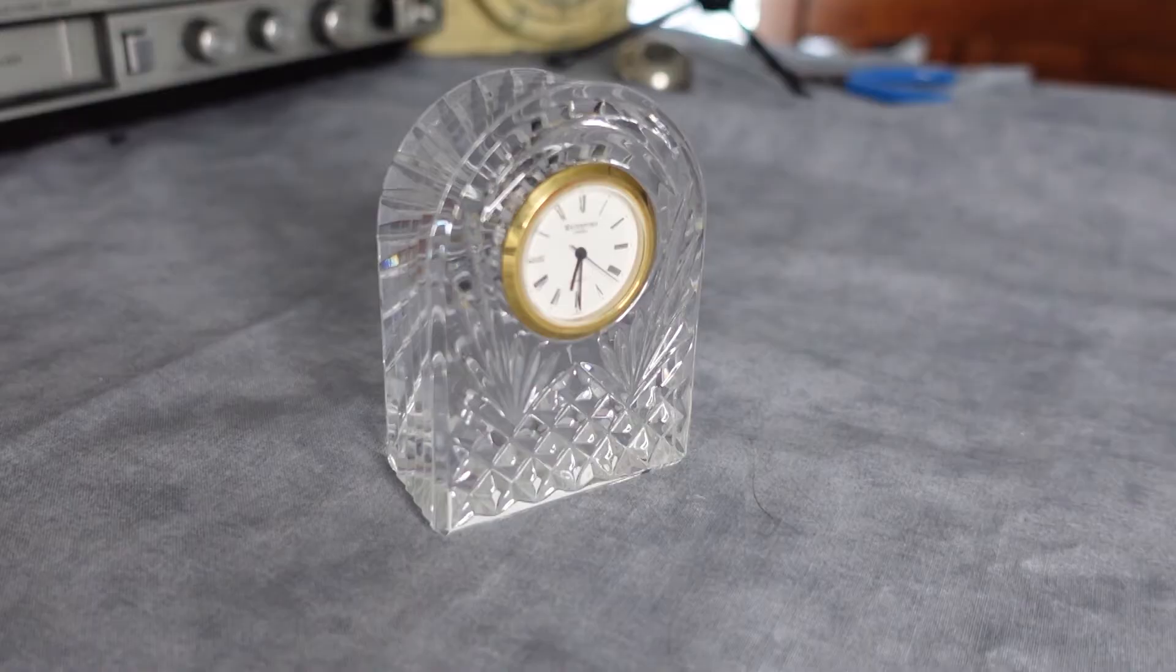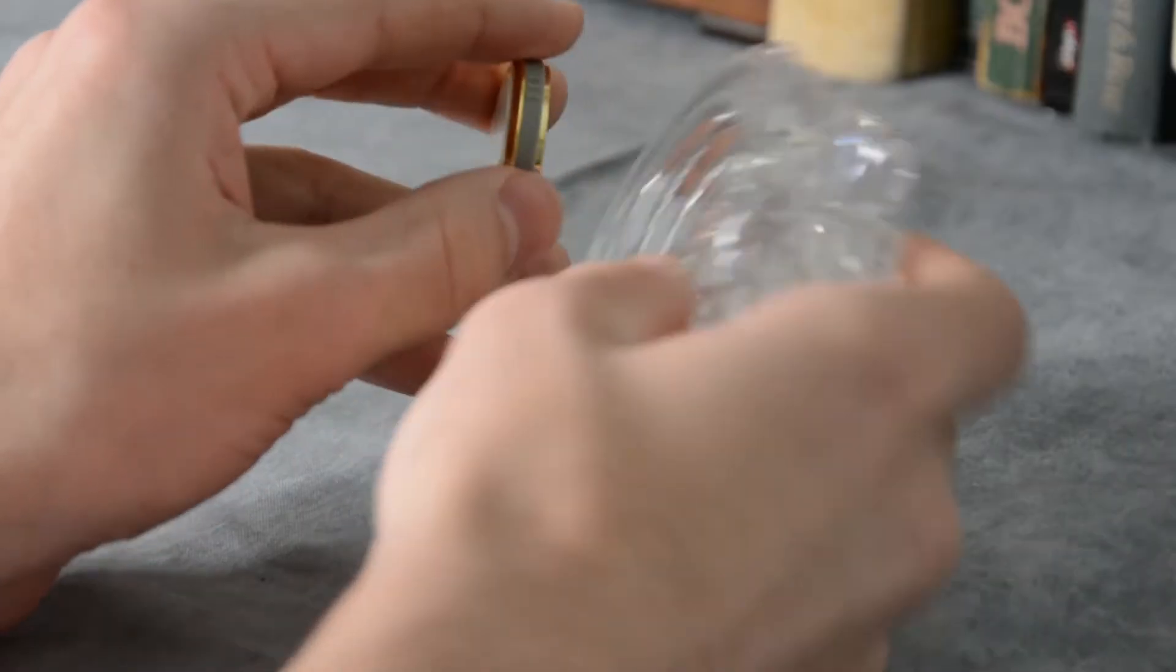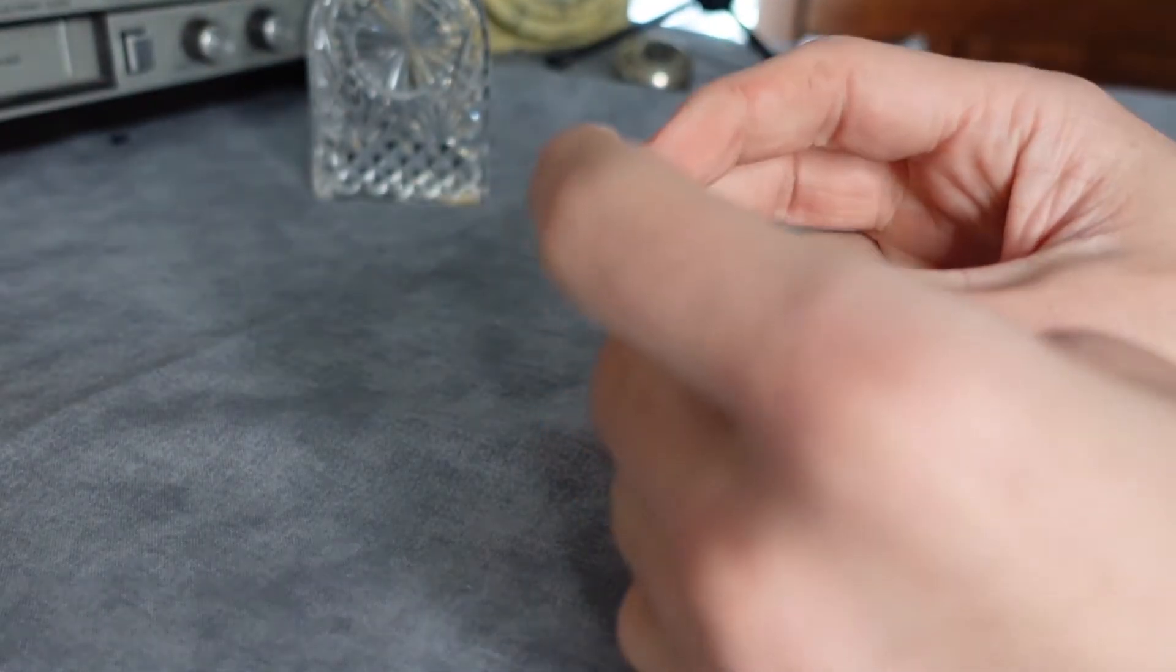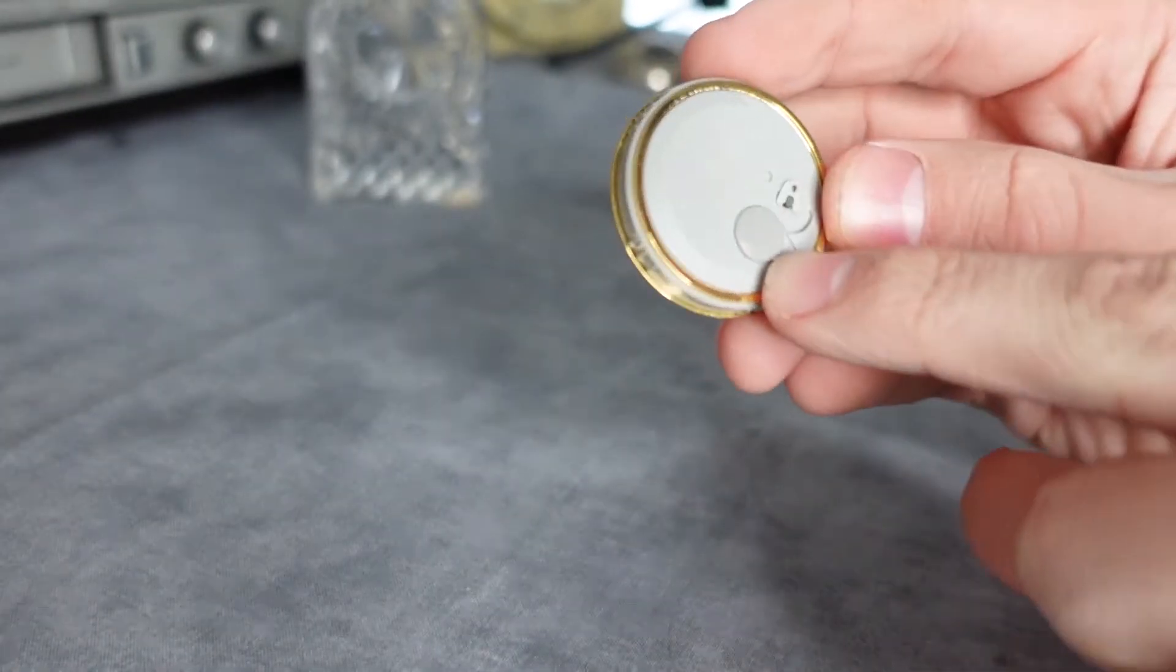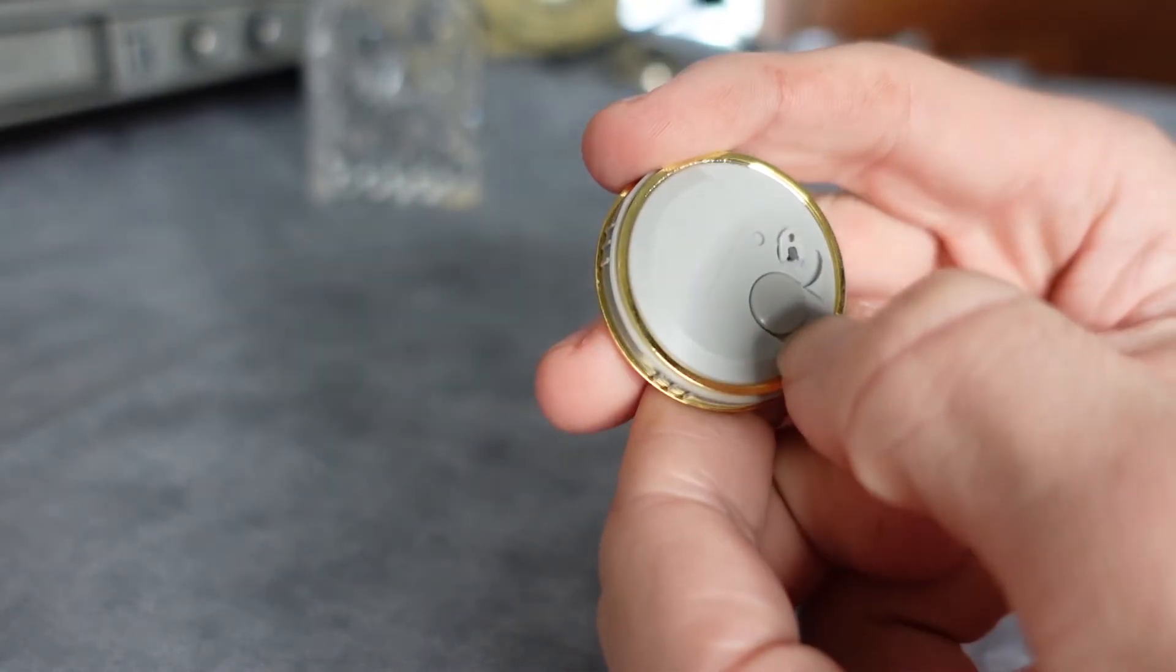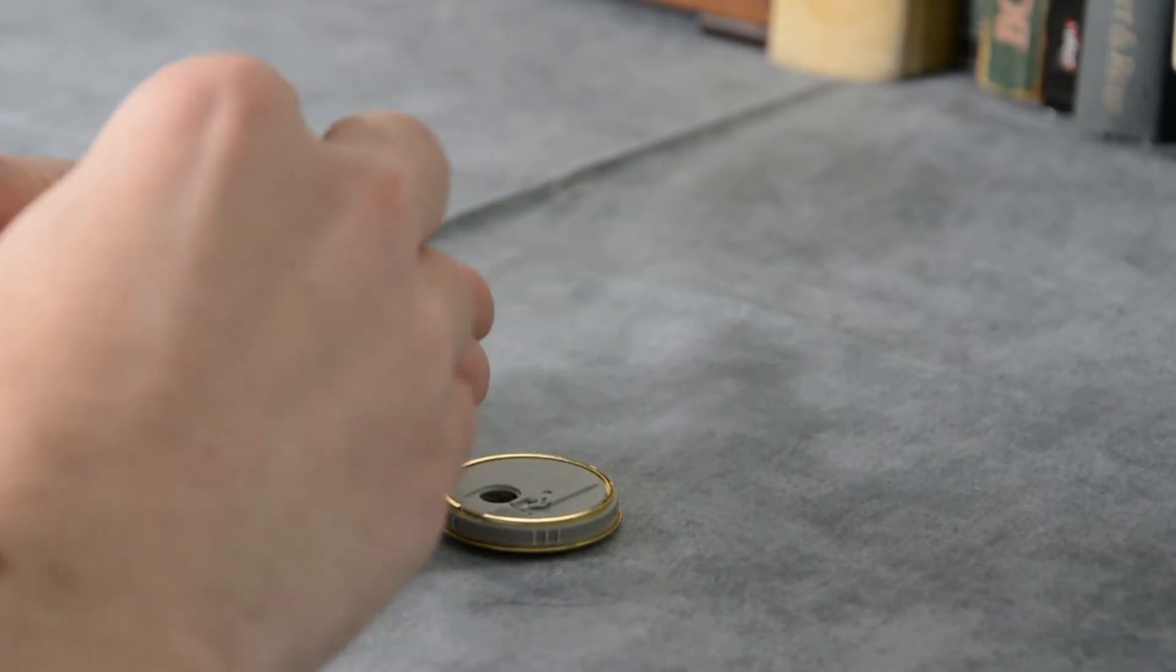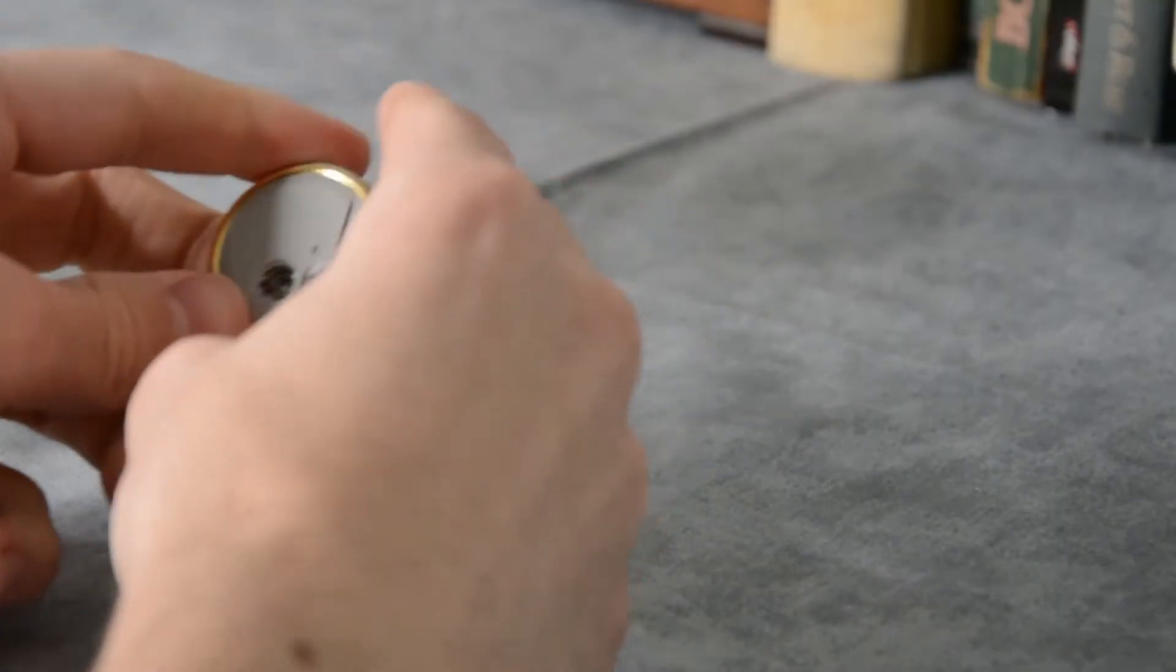To change the battery on this clock, first you need to take out the clock insert. Then on the back you'll find this rubber thing over the battery. Using your thumbnail, you can pull it off, and here it is close up. The battery came out with it as well.